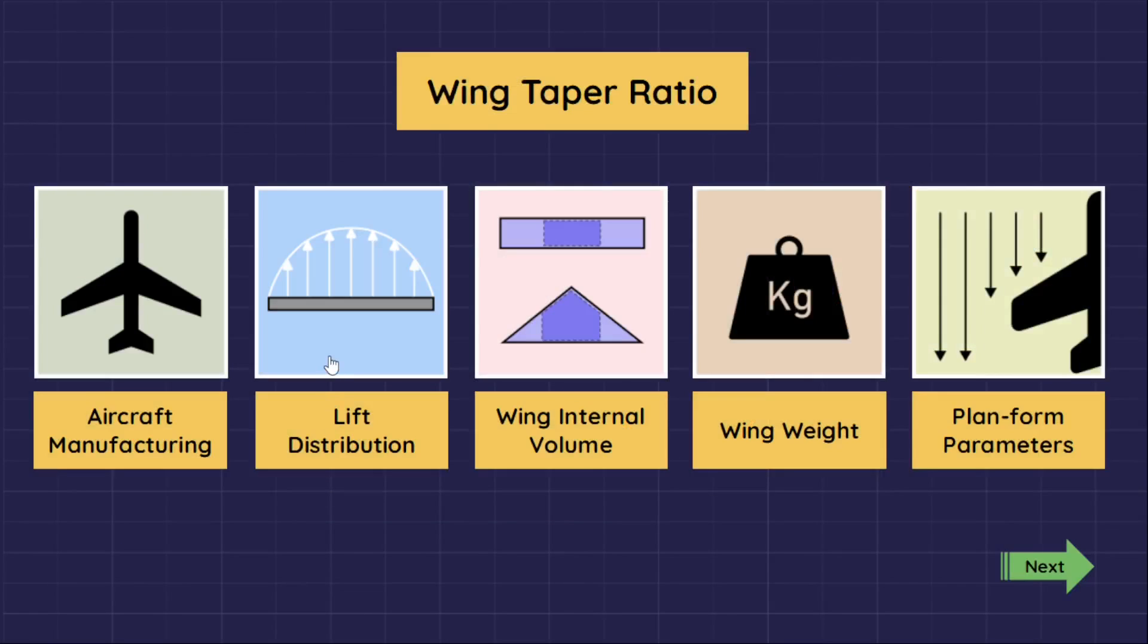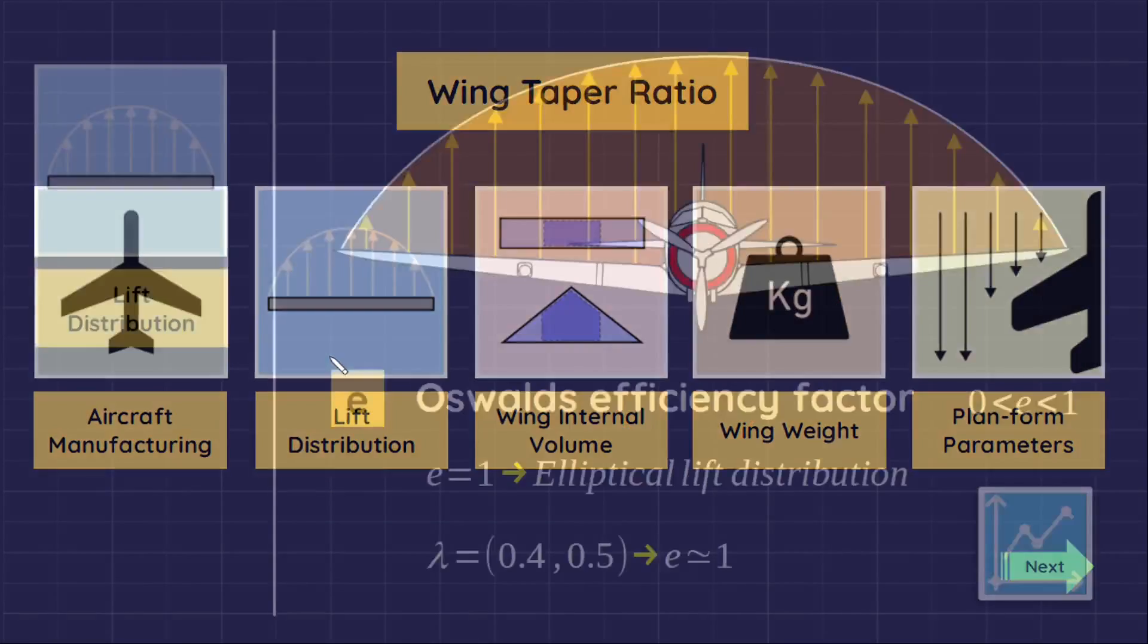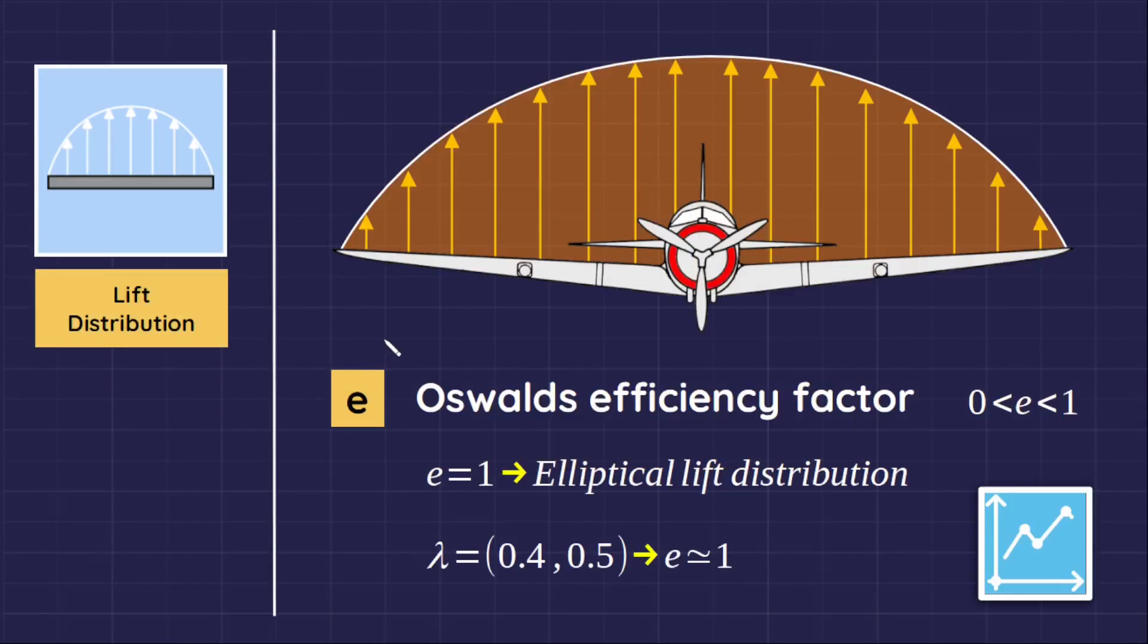Effect of taper ratio on lift distribution. Since the preferred lift distribution is the elliptical one, aircraft designers work to get it during the design of the aircraft, and tapering wing is one of the tools used to improve the lift distribution.